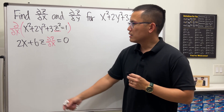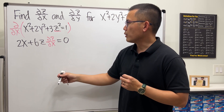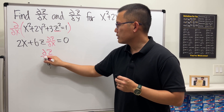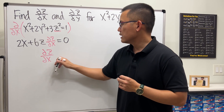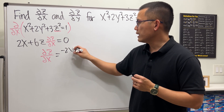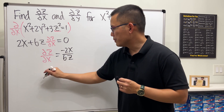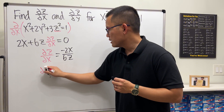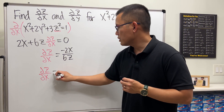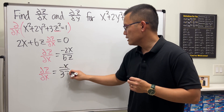Now we are going to solve this. I'm going to move this to the other side and divide 6z to both sides. So partial z with respect to x is equal to negative 2x divided by 6z. Reducing this, partial z with respect to x is just negative x over 3z.